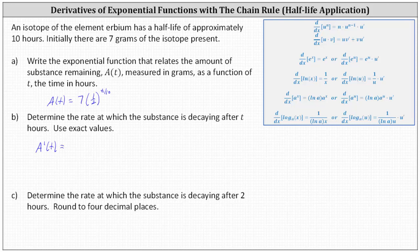In our case, notice A, the base, is 1 half. U is the exponent of t divided by 10, if we want 1 10th t, and therefore U prime is the derivative of 1 10th t with respect to t, which is 1 10th. This is all the information we need to determine A prime of t.